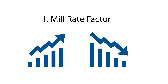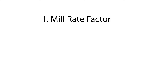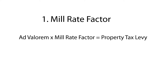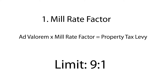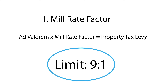To calculate the municipal portion of property taxes when using a mill rate factor, the ad valorem tax calculation is multiplied by the mill rate factor. There is currently a mill rate factor limit of 9 to 1, which restricts the ratio between the highest mill rate factor and the lowest mill rate factor of any property class.